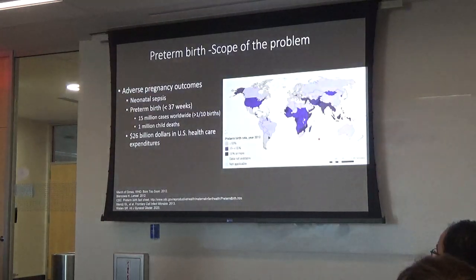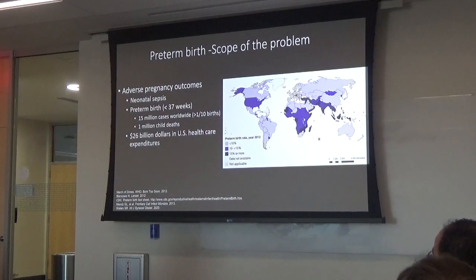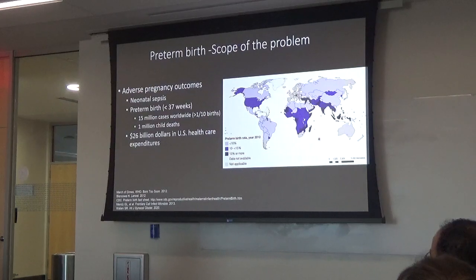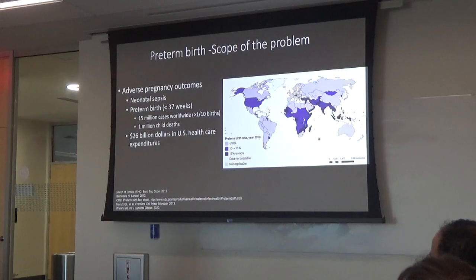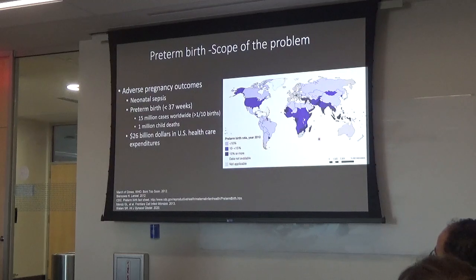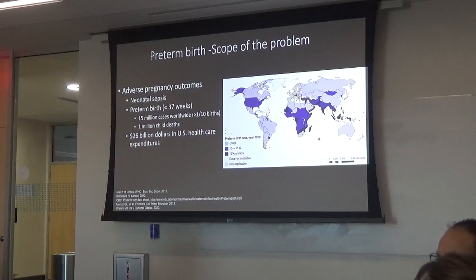I'm going to talk about adverse pregnancy outcomes — specifically neonatal sepsis (infection in the infant after birth) and preterm birth, which is being born before 36 weeks — at least a month early in a normal 40-week gestation. Worldwide, this is an epidemic that nobody talks about. There are 15 million cases annually, one million children die every year from being born prematurely, and it's affecting over 1 in 10 births.